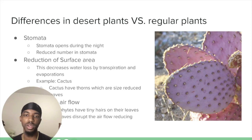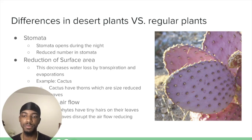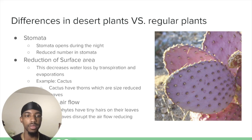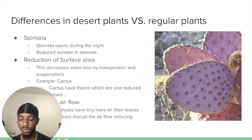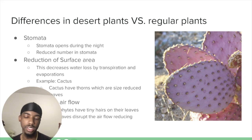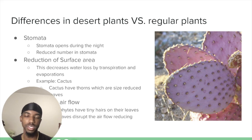Regular plants open their stomata during the daytime, which allows them to lose water at a higher rate. Some desert plants also have hairy leaves, which disrupt the airflow of the wind, causing them to conserve water. The main goal of desert plants is to conserve water because they never know when they will get water again, as it hardly rains in the desert.